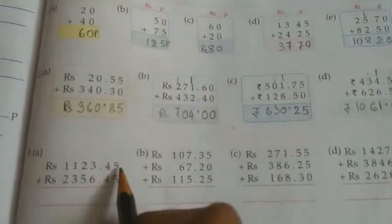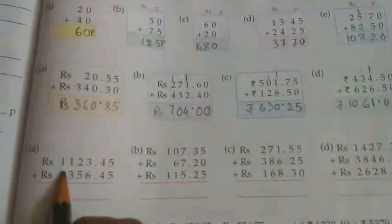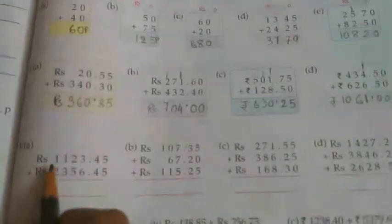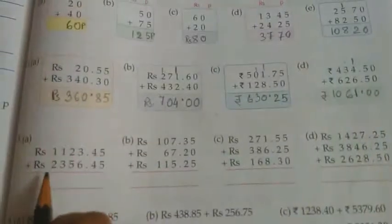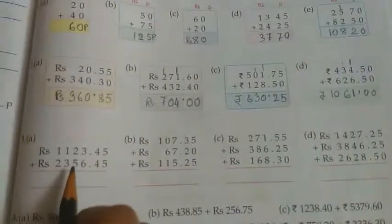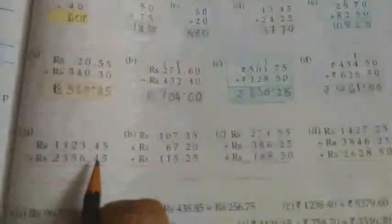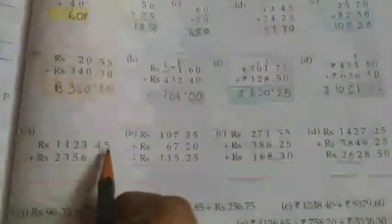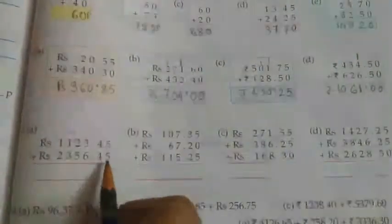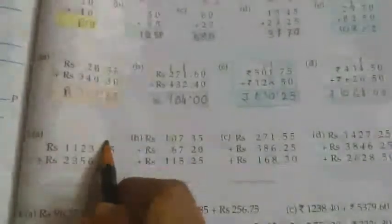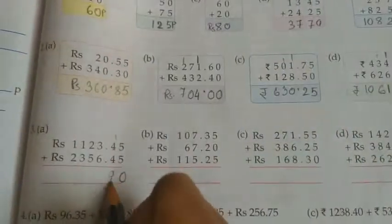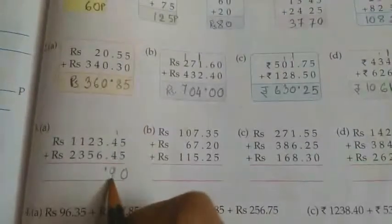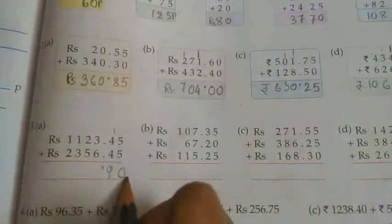Now come to 3a number. Here rupees section given with thousands value, that is 1,123 rupees 45 paise plus 2,356 rupees 45 paise. So we have to add together. 5 plus 5 equals 0, carry 1. 4 plus 4 equals 8, plus 1 equals 9. Now put the point. As there is no carry, so it is 90 paise.